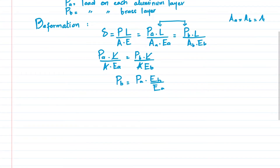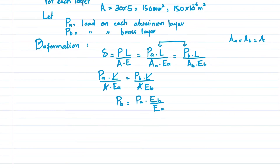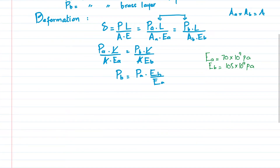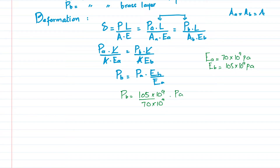From problem 2.36, E_a = 70 GPa = 70 × 10⁹ Pa, and E_b = 105 GPa = 105 × 10⁹ Pa. Substituting: P_b = (105 × 10⁹) / (70 × 10⁹) × P_a = 1.5 × P_a.